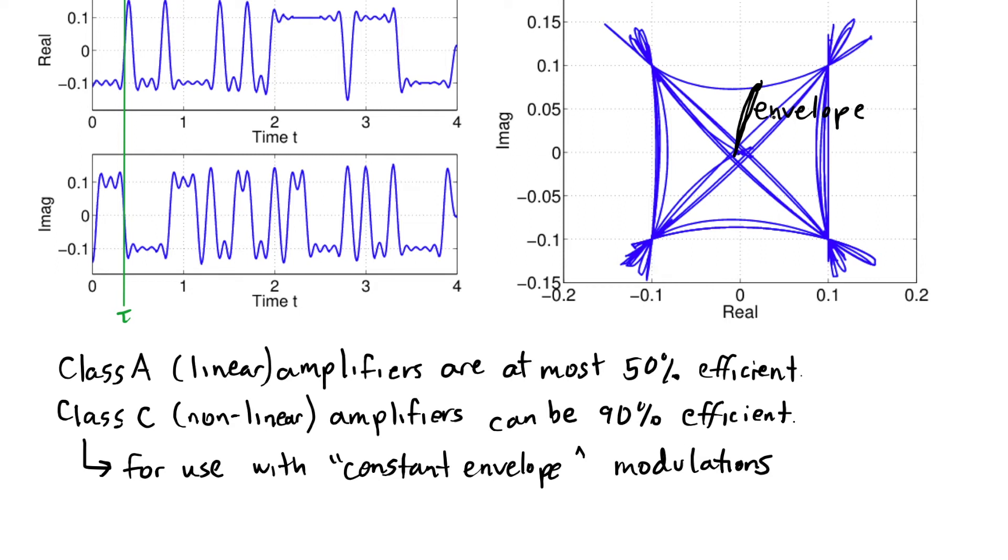And here you can see for QPSK, it's not constant because sometimes it actually gets very close to the origin. There's this power here that is very low compared to the peak power, which is this distance here. So it's not a constant envelope modulation.